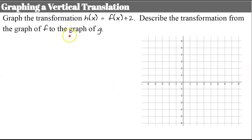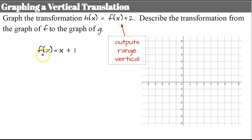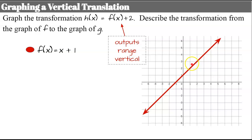Let's graph a vertical translation. We have function H written in terms of function F — we're going to add 2 to our outputs, then describe the transformation. Our function F is the same one: X plus 1. We'll graph this in red with a y-intercept of 1 and slope of 1. Now we write function H in terms of function F.